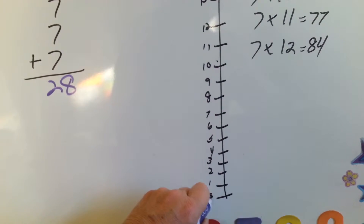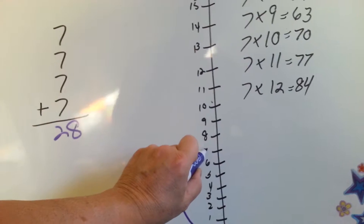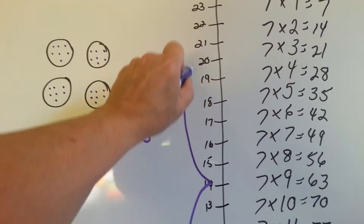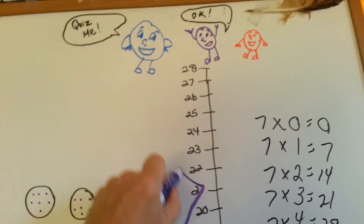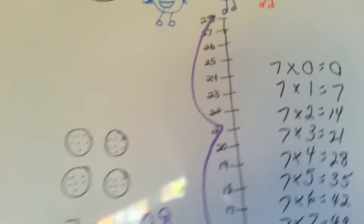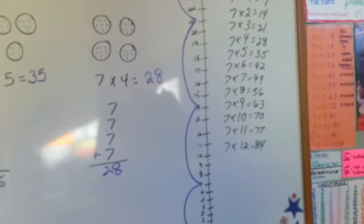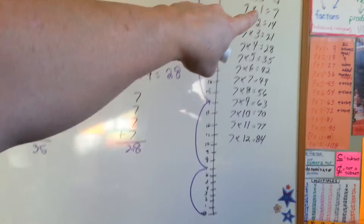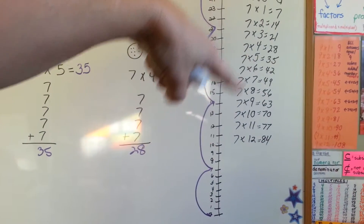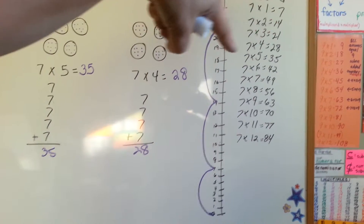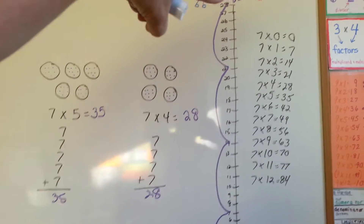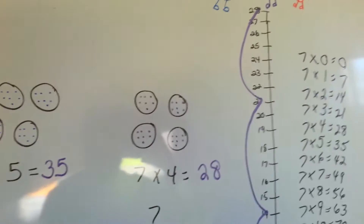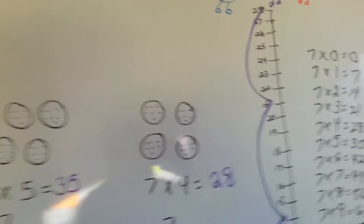You go from 0 to 7, then to 14, then to 21, and then to 28. And if you look over here, 0, 7, 14, 21, and 28 are the first answers — the first products of the 7 times table.